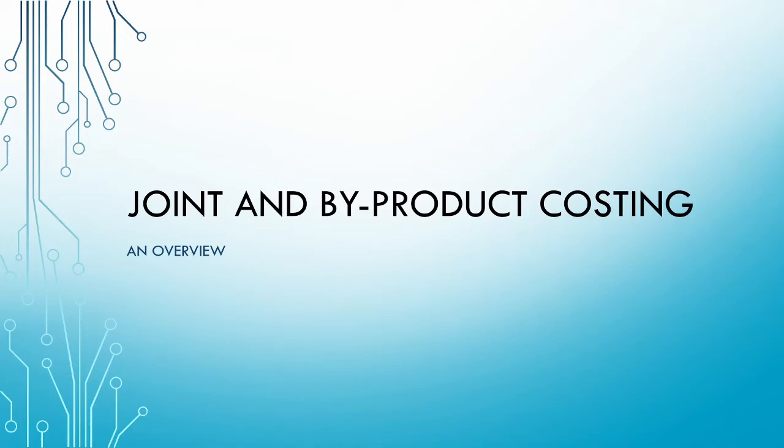Welcome to the first video in our series on joint and byproduct costing. In this series we are going to look at what joint and byproducts are, the different treatment of joint and byproducts, how we allocate costs between the joint products, and finally we will consider whether or not joint cost allocations are relevant for decision-making purposes.